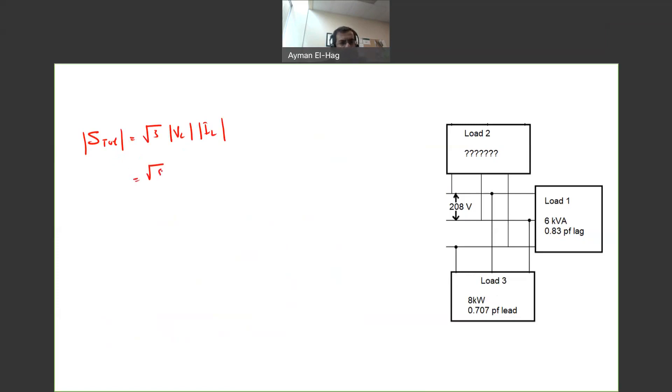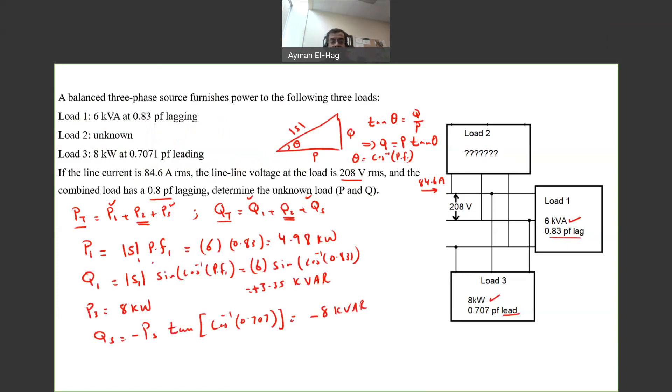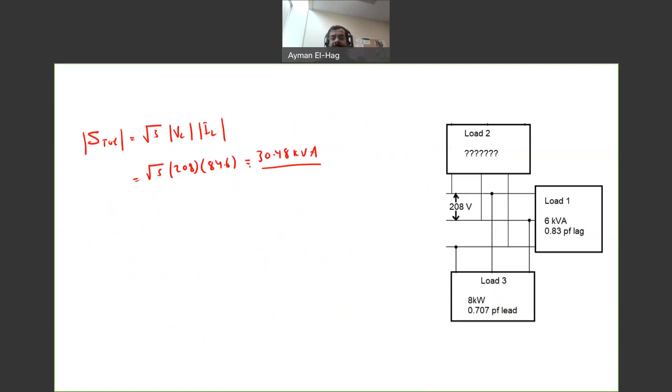This equals root 3, V line is 208, and I line equals 84.6. This gives me 30.48 kVA. That's the total S. Now I need to convert this S into P and Q using the power triangle.